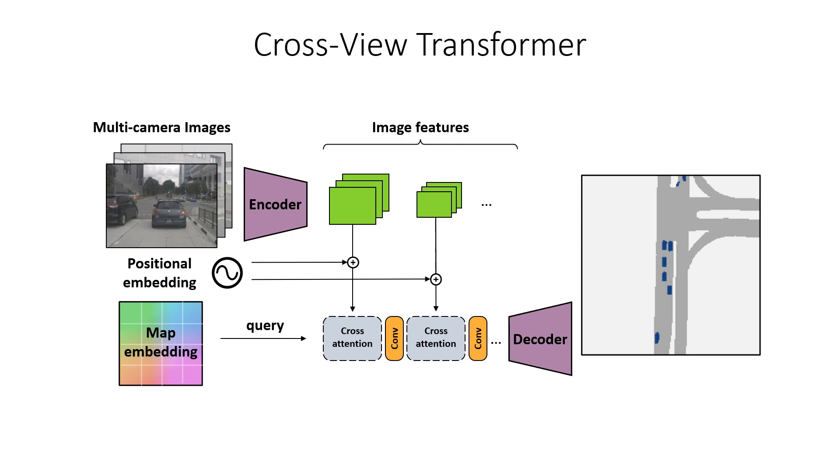So the entire architecture is end-to-end, super simple, and fast. And with this reformulation, we can build MapView representations simply by encoding geometry into the positional embedding. And in practice, this works quite well.